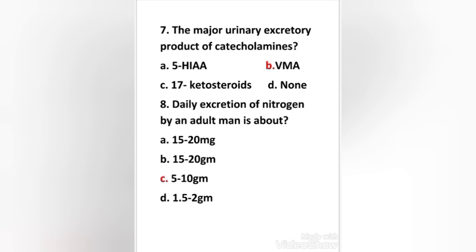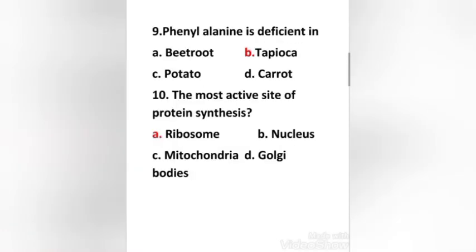Next question: Daily excretory product of nitrogen by an adult man is about: 15-20 mg, 15-20 gm, 5-10 gm, 1.5-2 gm. Right answer is option C: 5-10 grams. Next question: Phenylalanine is deficient in beetroot, tapioca, potato, carrot. Right answer is option B: phenylalanine is deficient in tapioca.